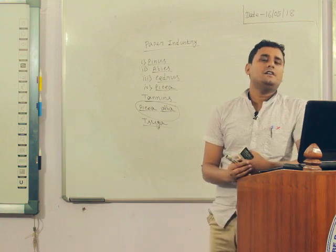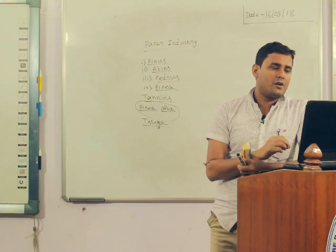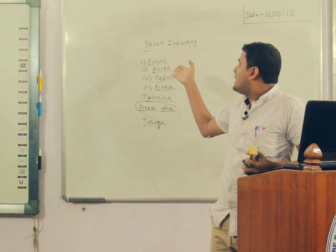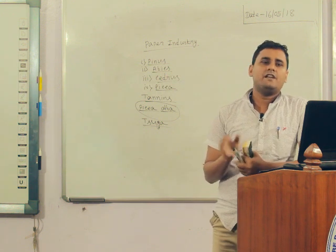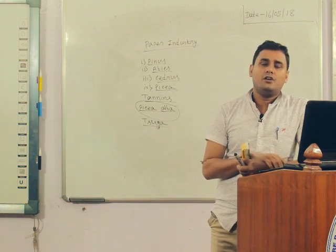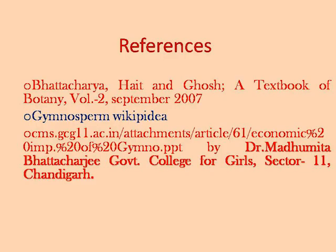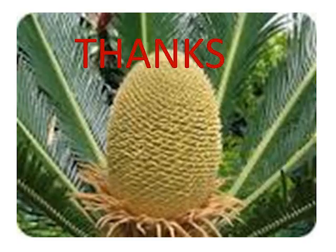Finally, we can conclude that gymnosperms are a very important and economically significant group of plants. They are the main source of good quality timber in India, and they also provide tannins, paper pulp, medicinal compounds, different kinds of resins, and rosins. These are the references. Thank you.